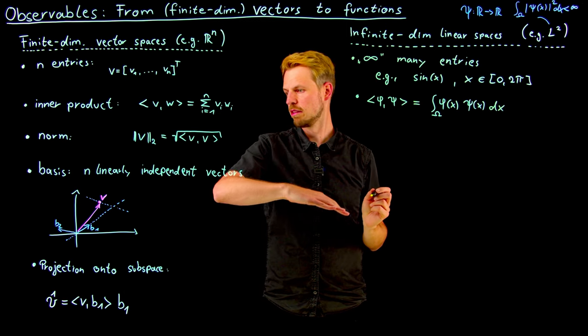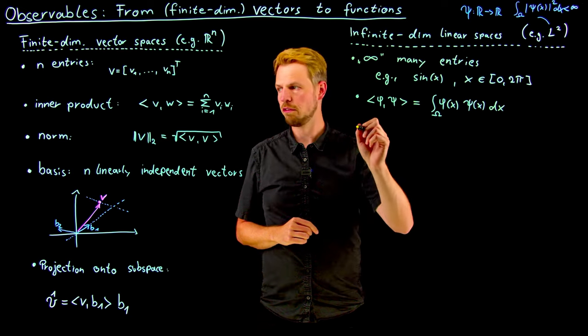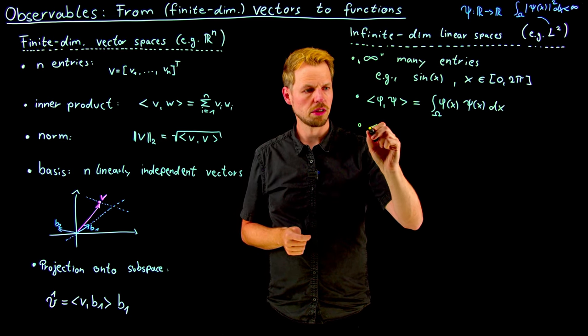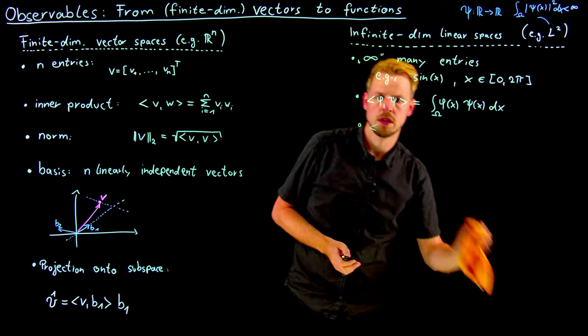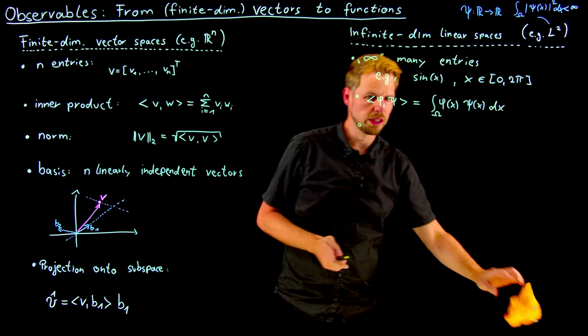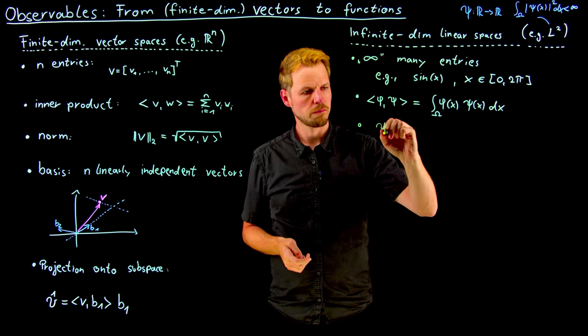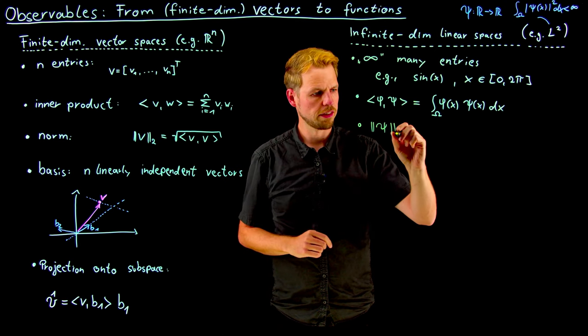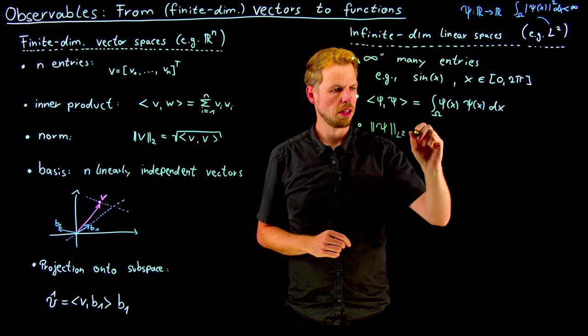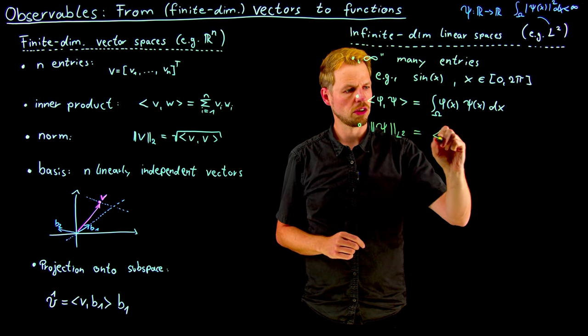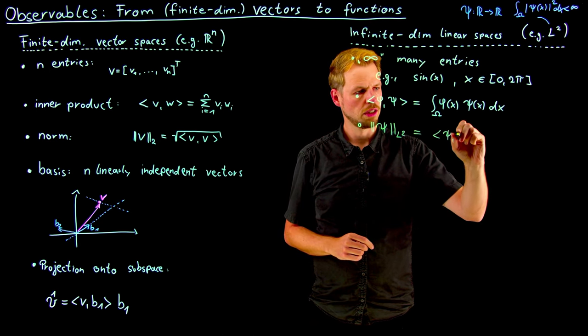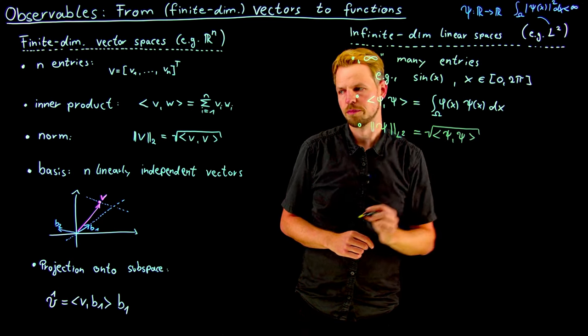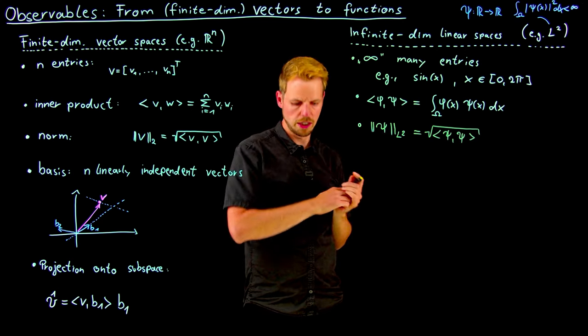Everything else follows very straightforwardly. The norm of a function - not the two norm or standard vector length, but the L2 norm - is defined completely analogously. It's the inner product of the function with itself, then taking the square root. Easy one-to-one correlation.